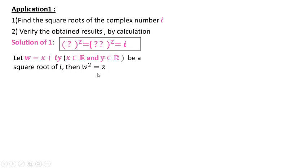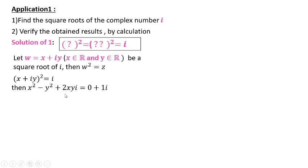By definition, w squared equals Z. Substitute w = x + iy and Z = i to get (x + iy)² = i. Do the expansion: x² − y² + 2xy·i. Rewrite i as 0 + 1·i. In this case, these two complex numbers are equal if and only if the real part of the first equals the real part of the other, and the imaginary part of the first equals the imaginary part of the other, which is one.